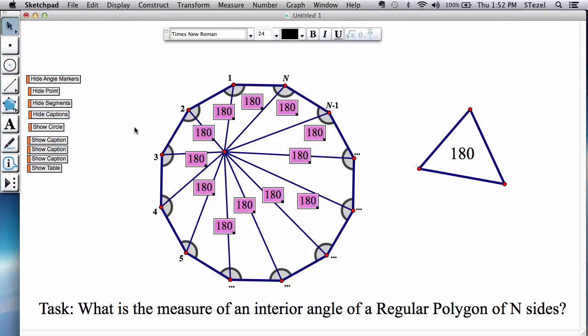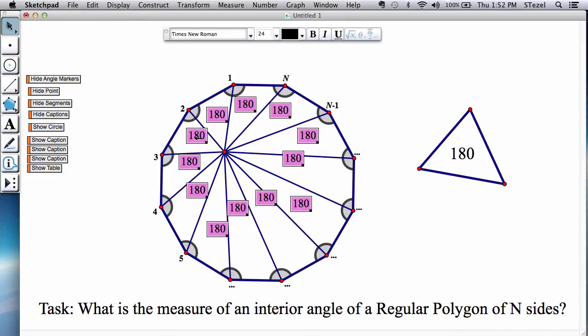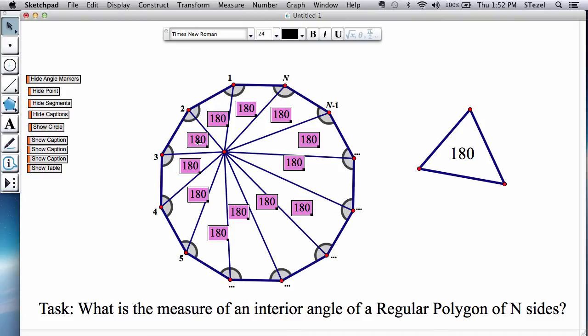So you would notice that all of these angles that we see in the triangles, they're all 180 degrees each. So what we need to figure out is how to remove this part that you do not care about in the center.